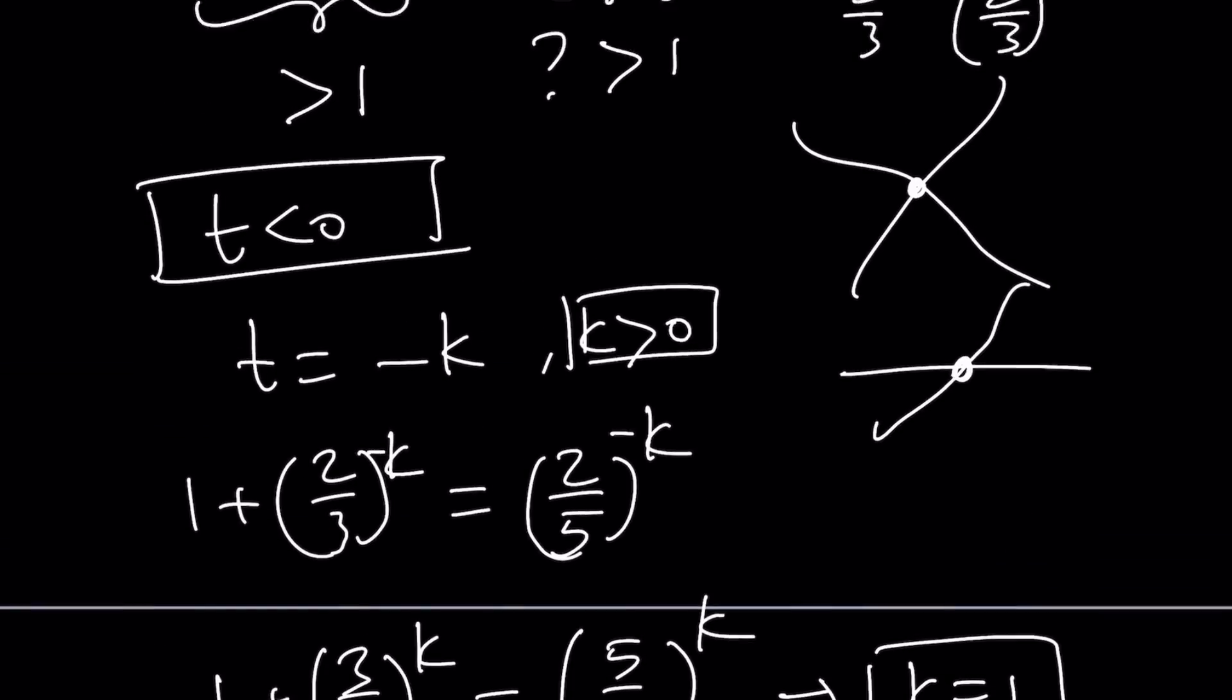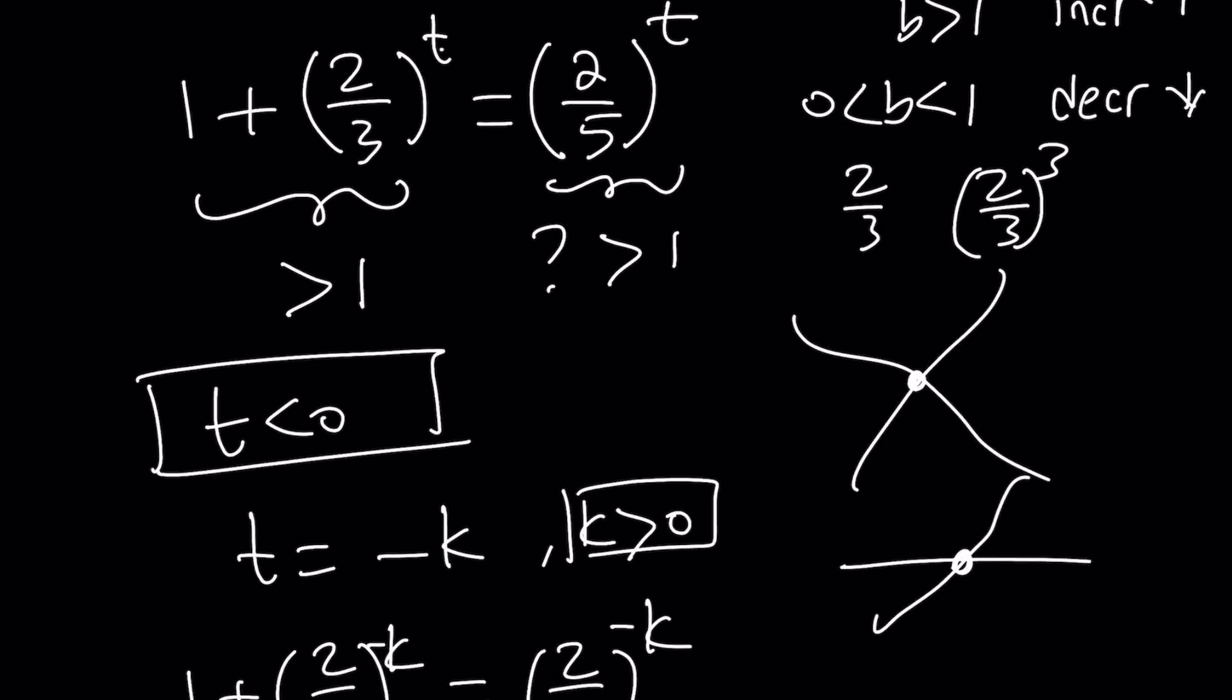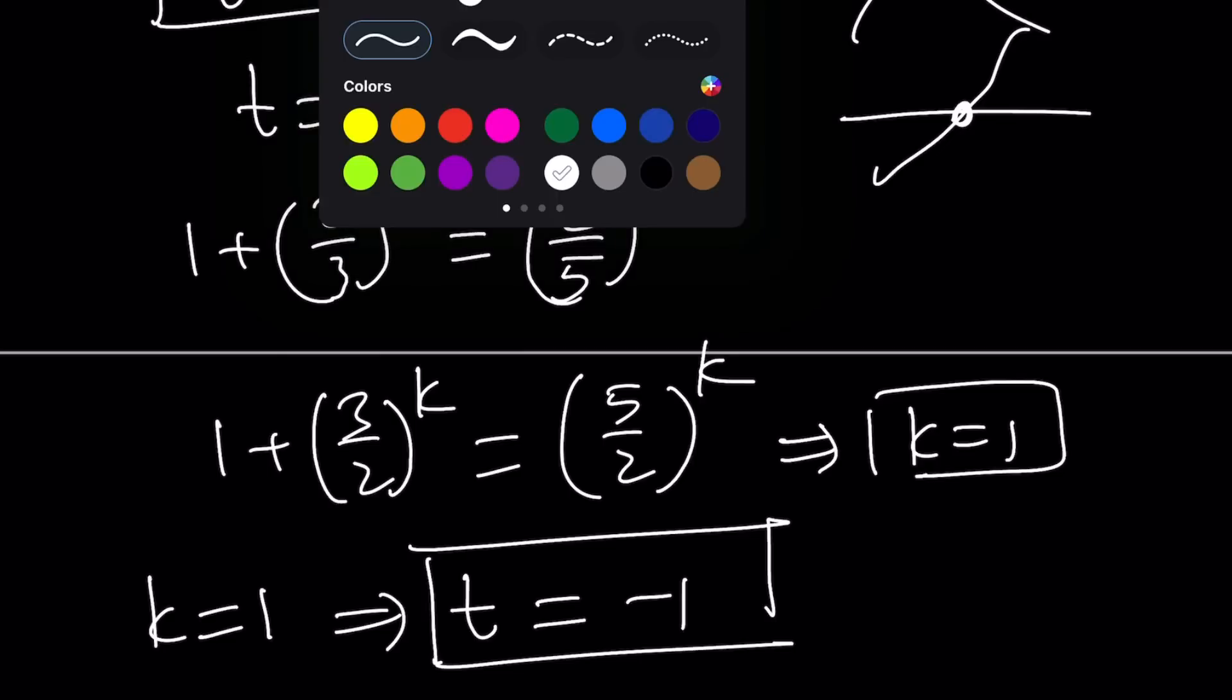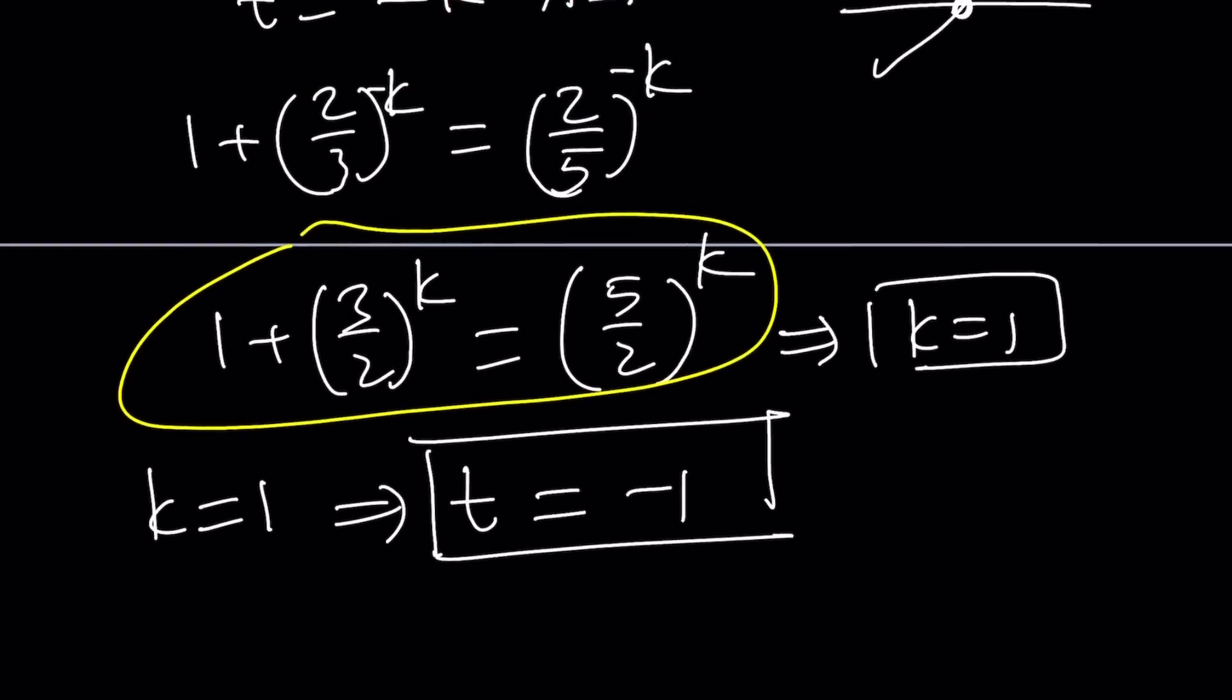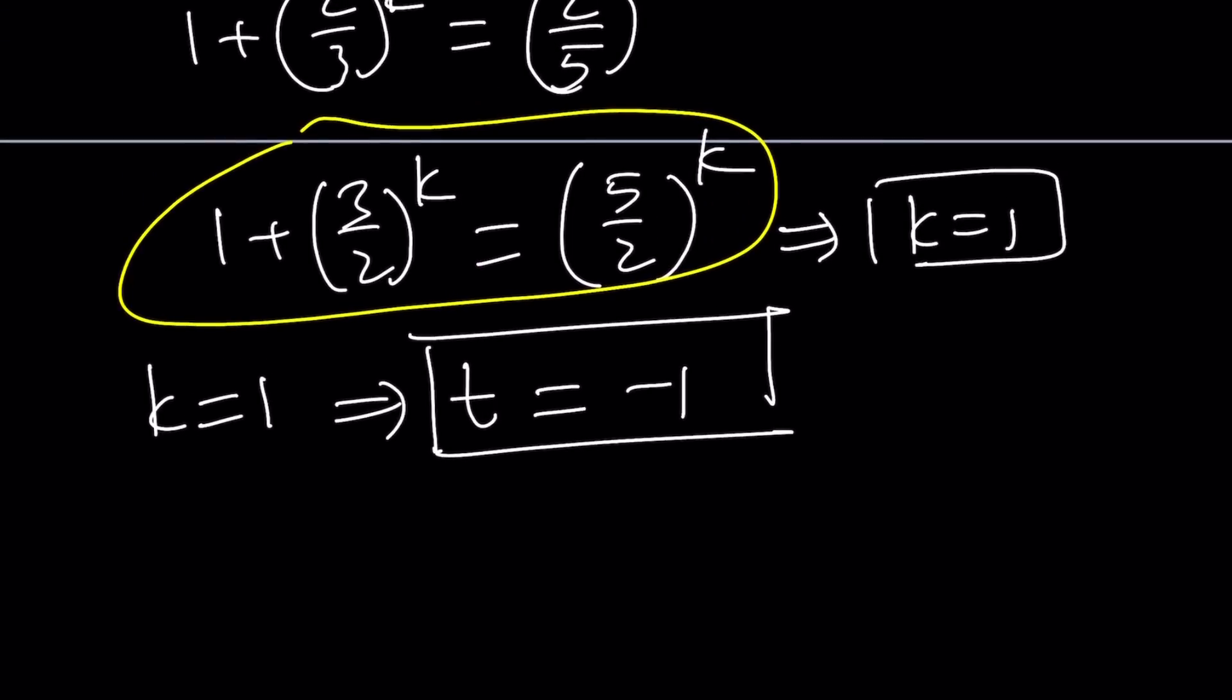Now you didn't have to do this. You could directly say, if I flip these and add, I'll get the answer. This is just a little bit of hand-holding because not everybody is familiar with these kinds of things. Basically, t is equal to negative 1.